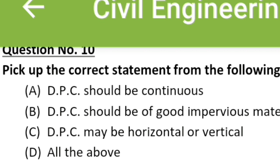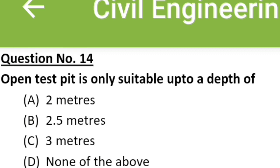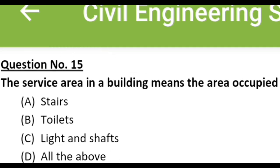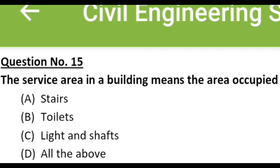Pick up the correct statement about DPC: Option A: DPC should be continuous, Option B: DPC should be of a good impervious material, Option C: DPC may be horizontal or vertical, Option D: all of the above. The correct answer is Option D: all of the above. Open test pit is only suitable up to a depth of: Option A: 2 meters, Option B: 2.5 meters, Option C: 3 meters, Option D: none of the above. The correct answer is Option C: 3 meters. The service area in a building means the area occupied by: Option A: stairs, Option B: toilets, Option C: lights and shafts, Option D: all the above. The correct answer is Option D: all the above.